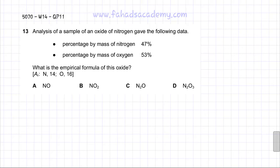The following question is related to empirical formula. The question states that analysis of a sample of an oxide of nitrogen gave the following data. So we know it's an oxide of nitrogen, we just don't know what the formula is. The data given is percentage by mass of nitrogen and percentage by mass of oxygen, and he's asking what is the empirical formula of the oxide, and he's given you the AR of nitrogen and of oxygen.